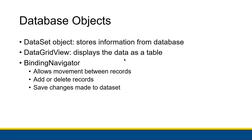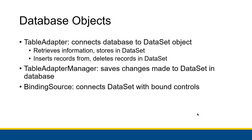The DataGridView displays the data as a table — specifically the dataset data — and that's the one that looked like an Excel sheet. The Binding Navigator provides controls to move between records, add or delete records, and save changes made to the dataset. The Table Adapter connects the database to the dataset object — when you start your application, the Table Adapter takes information from the database and puts it inside the dataset.